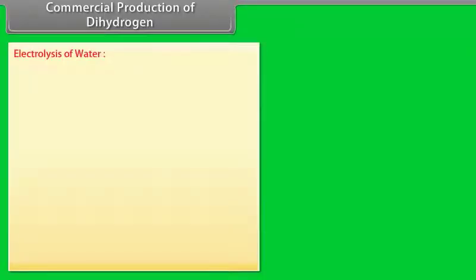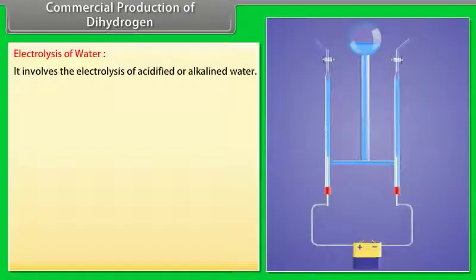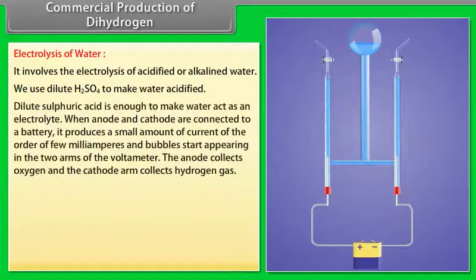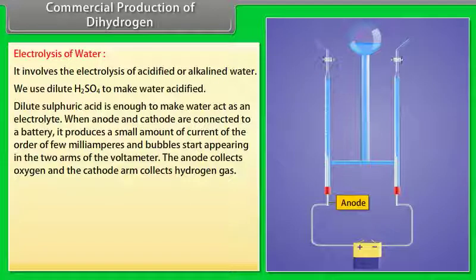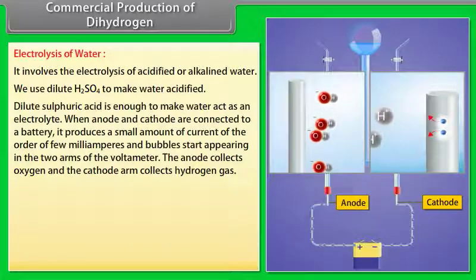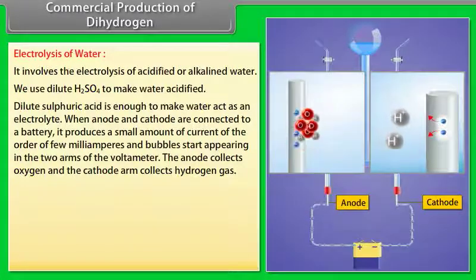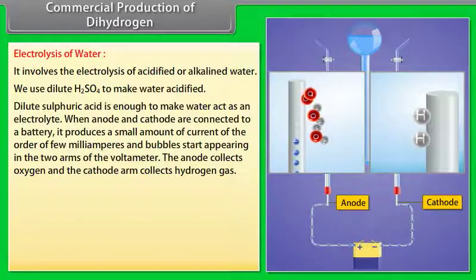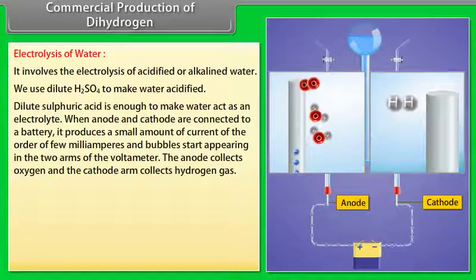Commercial production of dihydrogen. Electrolysis of water. It involves the electrolysis of acidified or alkalined water. We use dilute H2SO4 to make water acidified. Dilute sulphuric acid is enough to make water act as an electrolyte. When anode and cathode are connected to a battery, it produces a small amount of current of the order of few milliampere and bubbles start appearing in the two arms of the voltmeter. The anode collects oxygen and the cathode arm collects hydrogen gas.